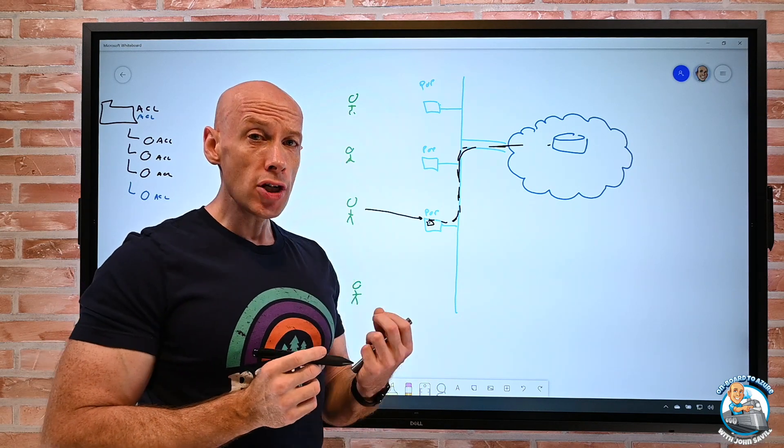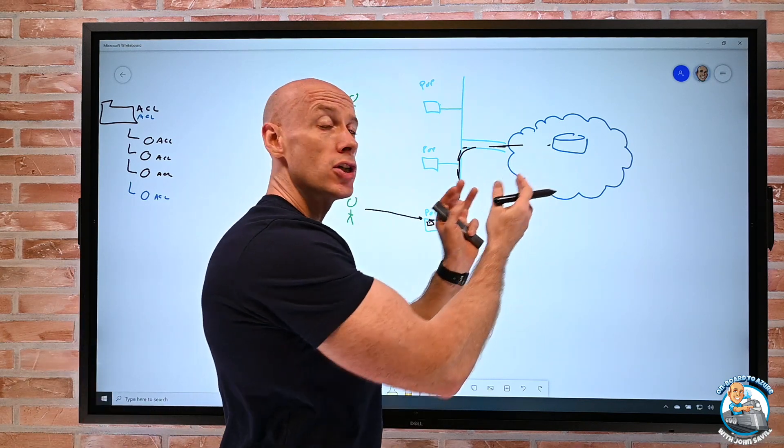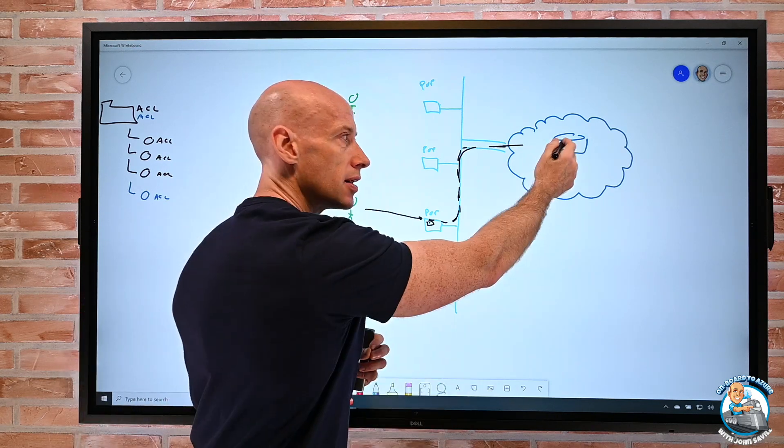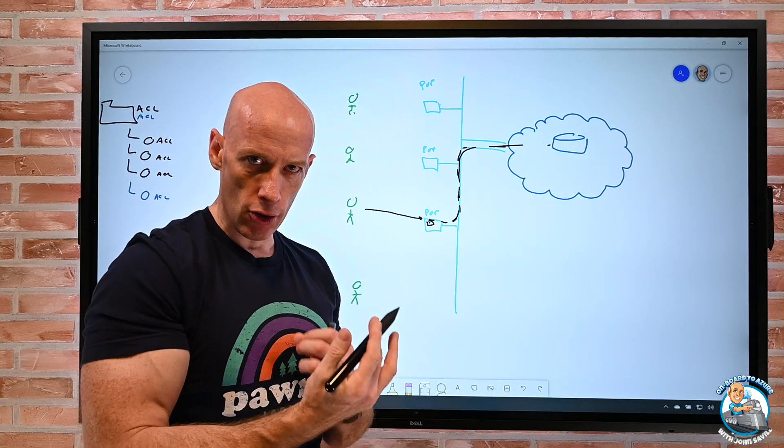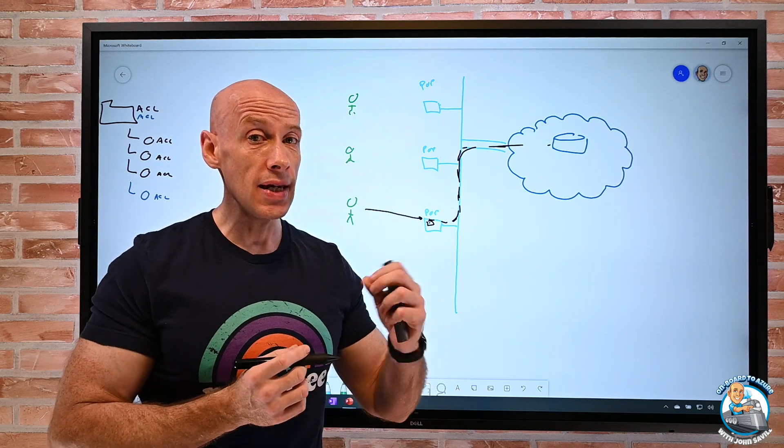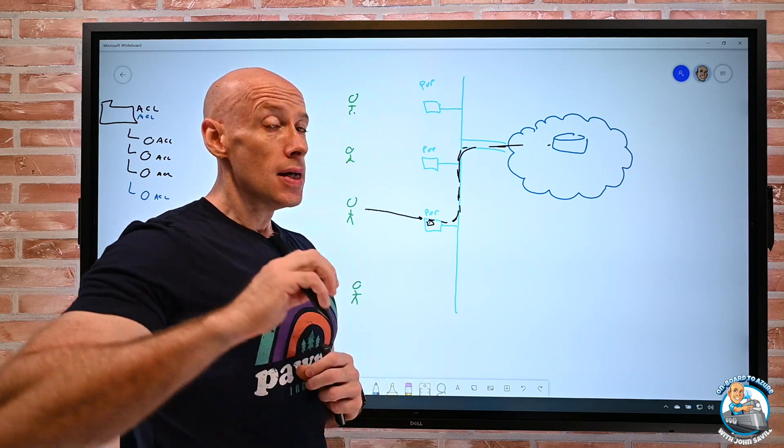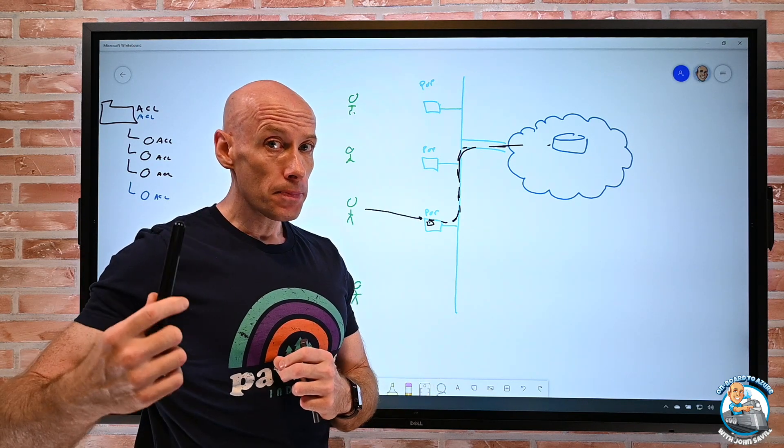What the multi-origin does, it lets me define origin groups. I then put origins, i.e. different storage accounts in different places in the group. I can set a priority and a weighting. There's health probes going on. So now, if I had kind of the primary, it was unavailable for some reason